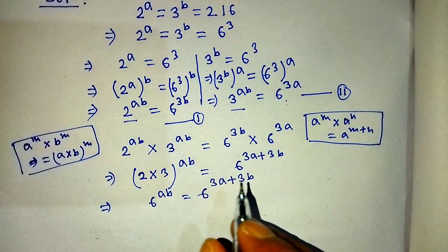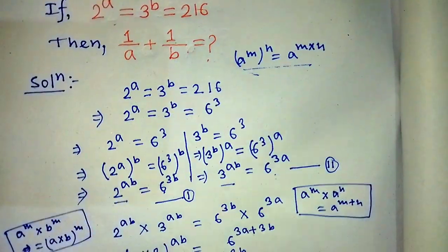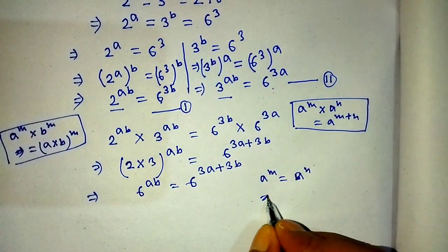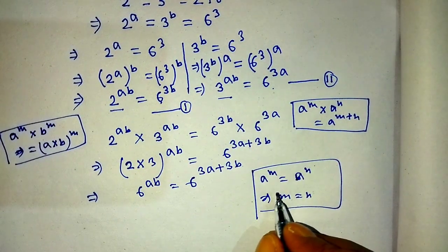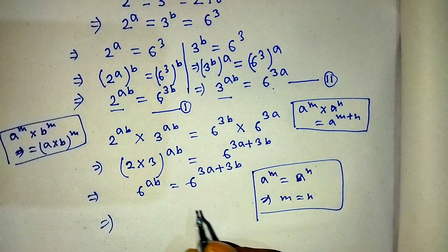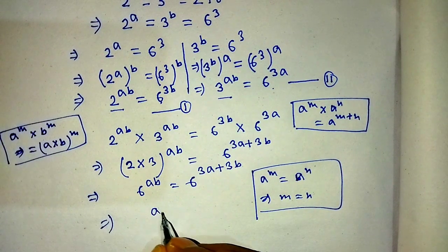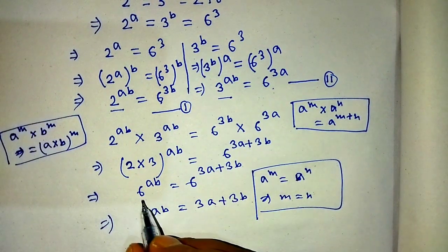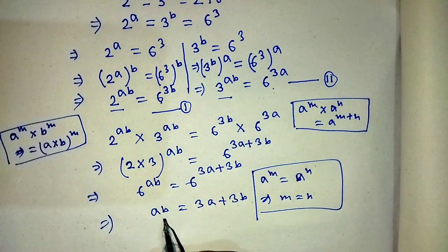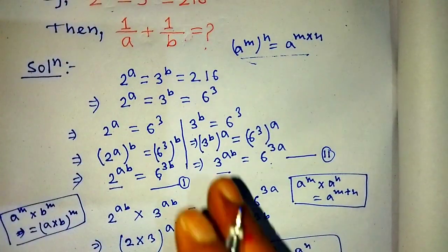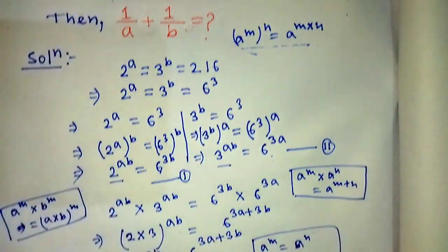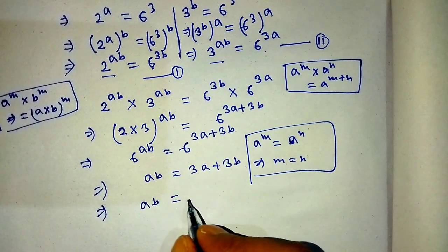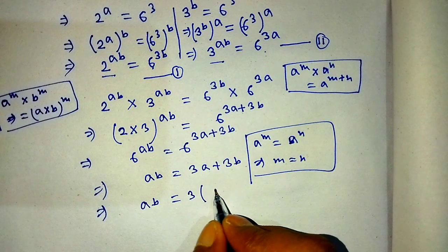Since the bases are the same, we equate the exponents: AB is equal to 3A plus 3B. We can factor the right side as 3 times (A plus B), giving us AB equals 3(A + B).